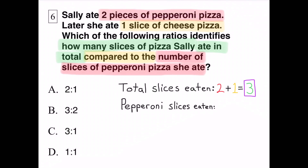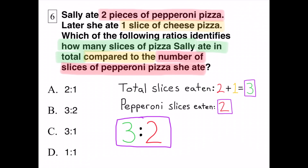Two pepperoni plus one cheese slice gives a total of three slices eaten. The total number of pepperoni slices eaten is two. So the ratio of the total number of slices eaten compared to the total number of pepperoni slices eaten is three to two.